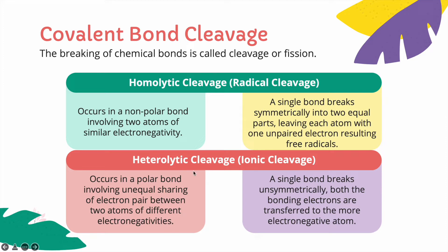Heterolytic cleavage or ionic cleavage occurs in a polar bond involving unequal sharing of an electron pair between two atoms of different electronegativities. A single bond breaks unsymmetrically. Both the bonding electrons are transferred to the more electronegative atom.